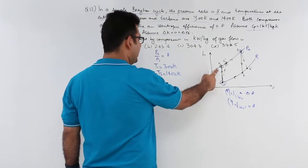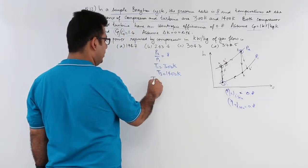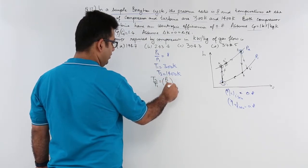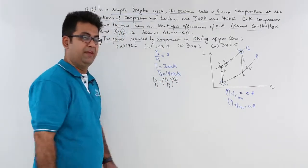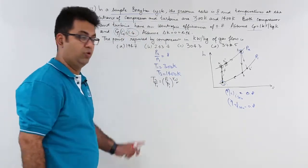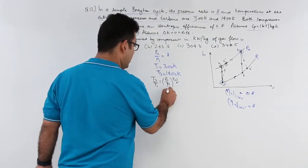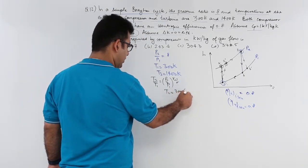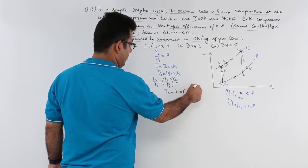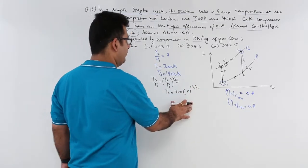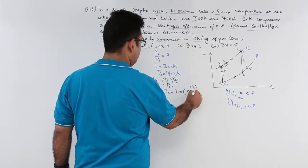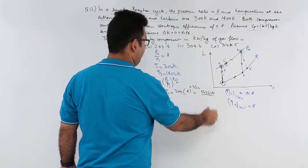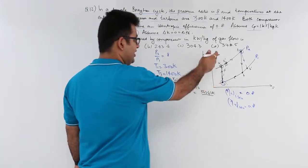If you take this ideal process then I can find out T2 by T1 is equal to P2 by P1 to the power gamma minus 1 by gamma. And we know that the value of gamma is 1.4. So T2 is equal to T1 is 300 into 8 to the power 0.4 by 1.4. This would give you a value of T2 as 543.43 kelvin.